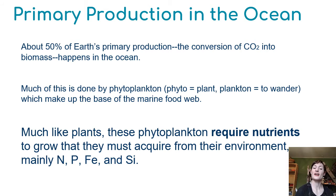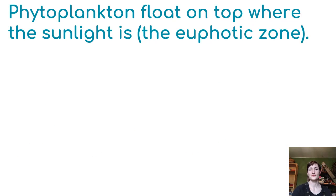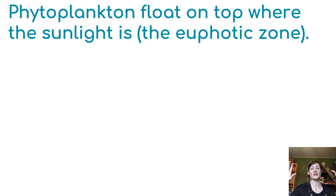Much like plants, phytoplankton — these photosynthesizing organisms in the ocean — are going to require nutrients, and they require a lot of the same nutrients that plants do: nitrogen, phosphorus, and interestingly iron and silica, which are limiting in their environment. Phytoplankton are floating on the top where sunlight is, so they need to stay up in the surface area — the euphotic zone — in order to photosynthesize and make food.